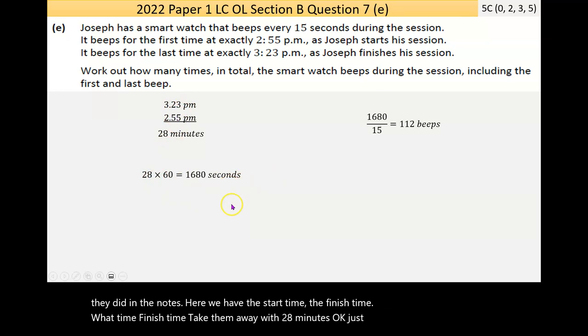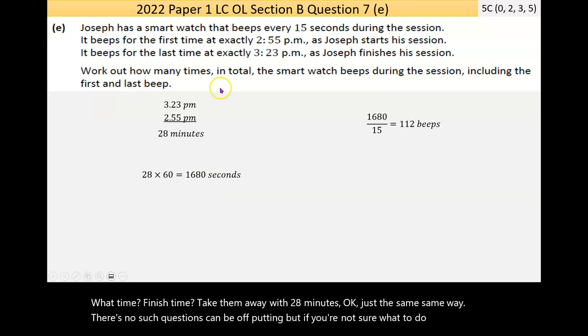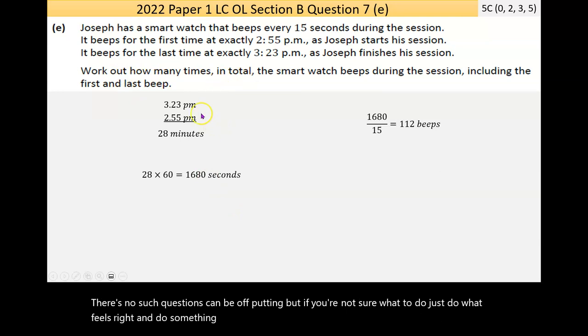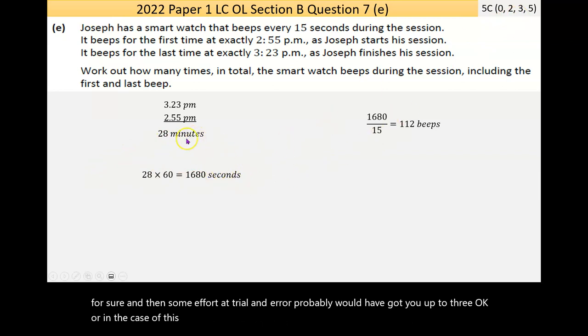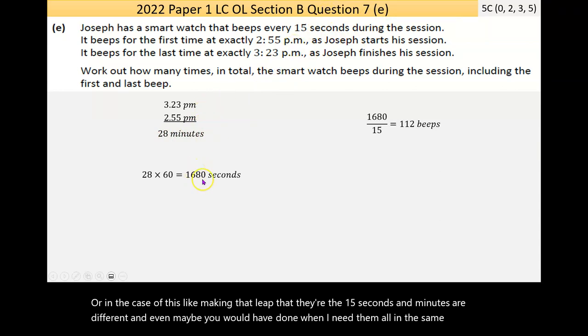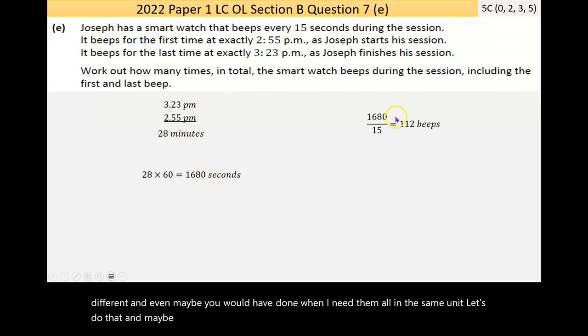It's beeping every 15 seconds. So how many 15s are there in 28 minutes? They're not the same units, but I can always convert minutes to seconds. 28 by 60 is 1680 seconds. Then how many 15s, that's division, in 1680. Divide that by 15, and that gives me 112 times. Taking them away would have got you up to the two marks for sure. And then some effort at trial and error probably would have got you up to three.